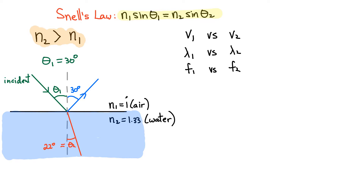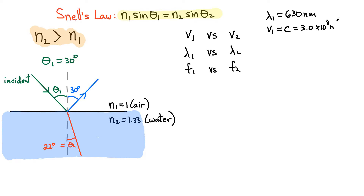We've dealt with what happens to the angle inside different media, but now we can also compare other wave quantities. Let's consider red light going in air, where the wavelength lambda 1 is approximately 630 nanometers. In air, the speed V1 is approximately equal to the speed of light in vacuum: 3 times 10 to the 8 meters per second. The frequency is speed divided by wavelength, giving approximately 4.76 times 10 to the 14 hertz.